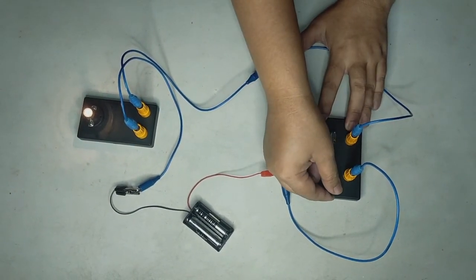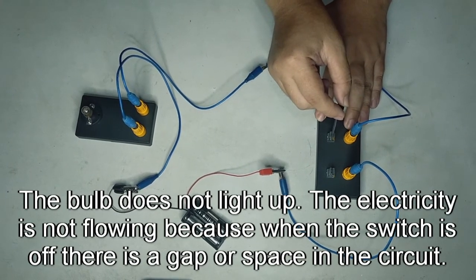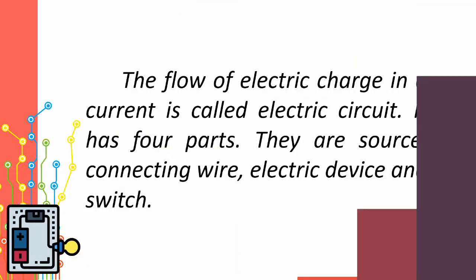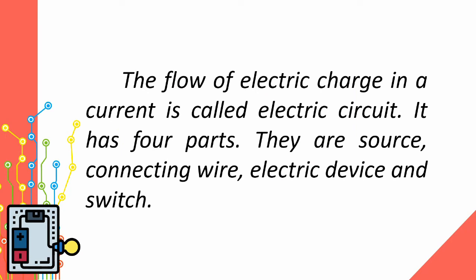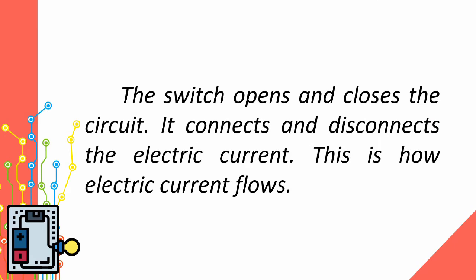This time, let's turn off the switch. What happens? The bulb does not light up. The electricity is not flowing because when the switch is off, there is a gap or space in the circuit. The flow of electric charge in a current is called electric circuit. It has four parts: source, connecting wire, electric device, and switch. The source may be a battery or a dry cell — it supplies the electric current to the circuit. The electric current flows through connecting wires to the electric device, which can produce light or heat. The switch opens and closes the circuit.